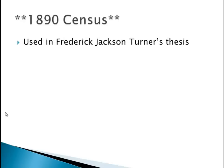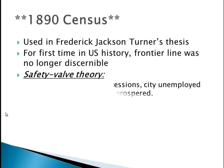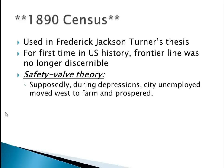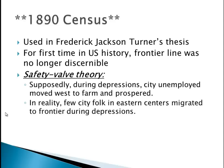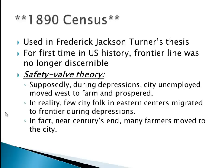The 1890 census: for the first time in U.S. history, there was no frontier line — you couldn't tell where the frontier line was anymore. There's a theory called the safety valve theory, which says that during depressions, city unemployed could move west to farm and prosper. If life was bad, you're going through a depression or panic and lose your job, there's always the hope you can move out west. In actuality, few people really did this. After the 1890 census, that hope really goes away. By the 1900s, more and more farmers are moving to the cities, and by 1910, farmers are for the first time a minority of the population.